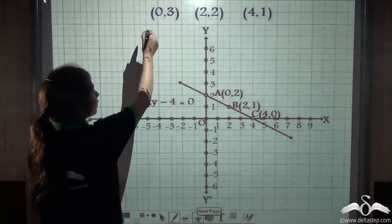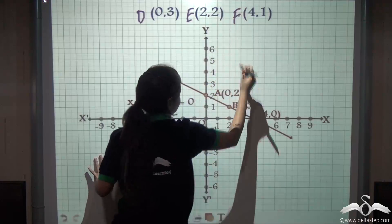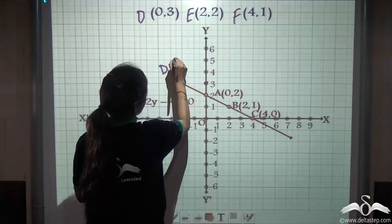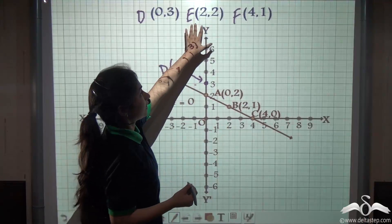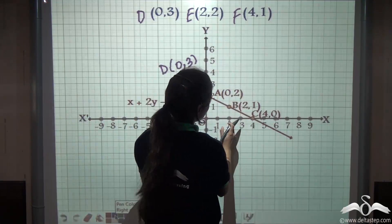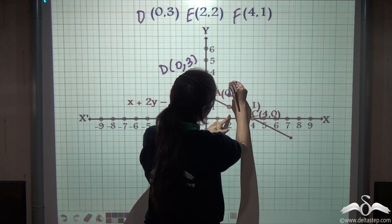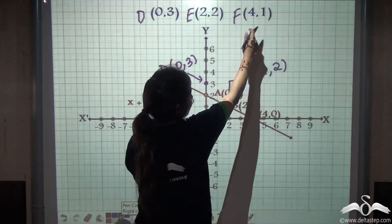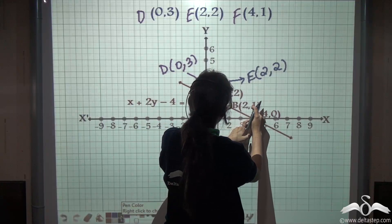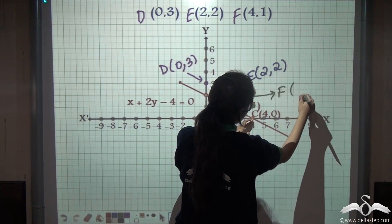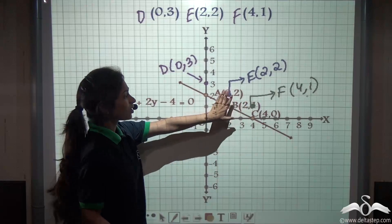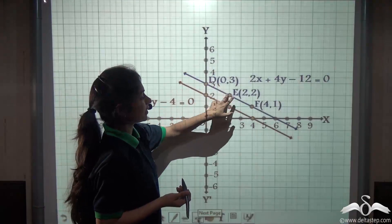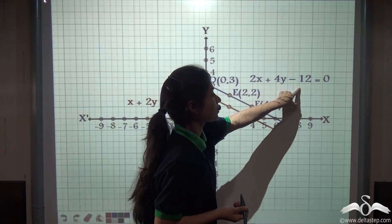Let's plot these points and name them D, E, and F. Point D is (0, 3) — 0 on the x-axis, 3 on the y-axis. Point E is (2, 2) — it lies here. Point F is (4, 1) — so 4 and 1 here. Now let's join these points. This blue line joins points D, E, and F and is the graph of the equation 2x plus 4y minus 12 equals 0.